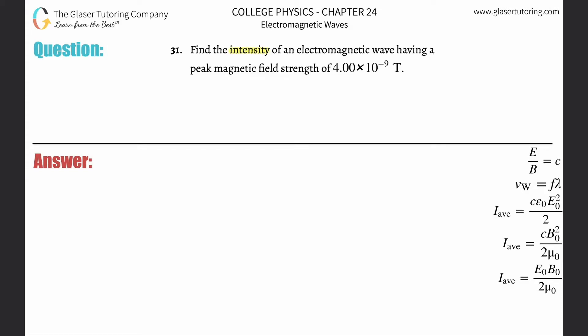Number 31: Find the intensity of an electromagnetic wave having a peak magnetic field strength of 4.00 times 10 to the minus ninth Tesla. So we need a formula that relates intensity to peak magnetic field strength.